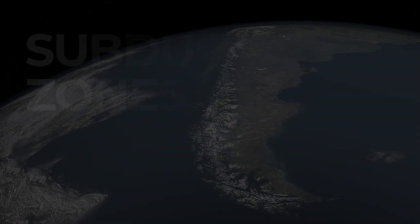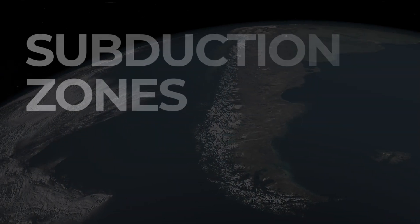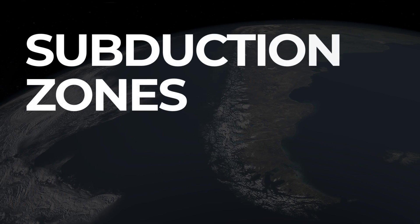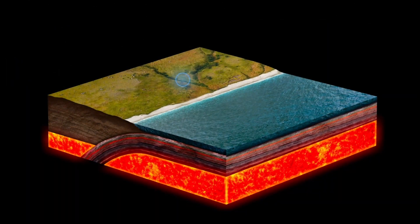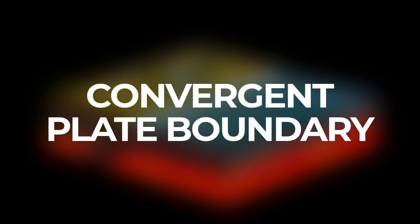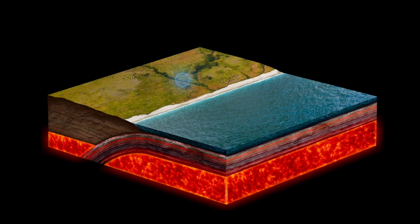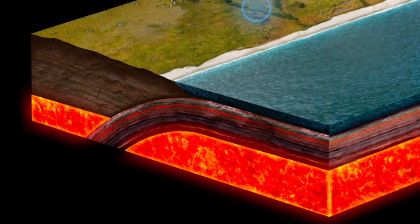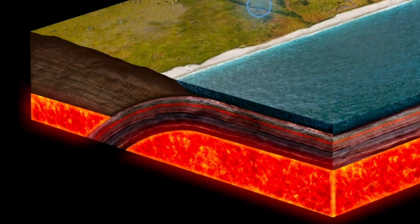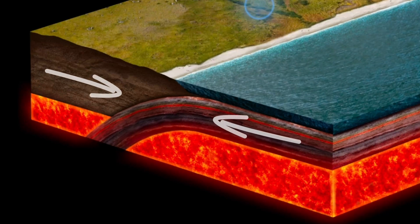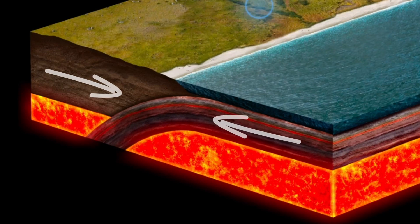Let's take a quick look at subduction zones. So what is a subduction zone? It is simply a type of convergent plate boundary that we see on the surface of the Earth in different regions. Convergent means that it's an area where two slabs of the Earth's crust, or lithosphere, are colliding with one another, coming together.